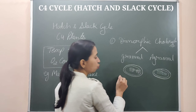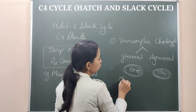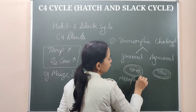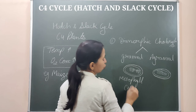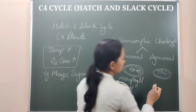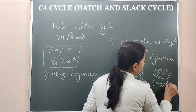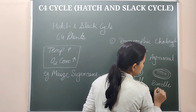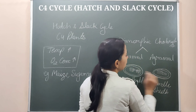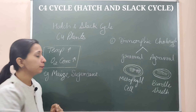The granal chloroplasts are found in the mesophyll cells of the leaf, whereas in the bundle sheath cells, the chloroplasts present are agranal chloroplasts.